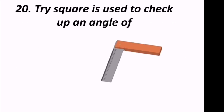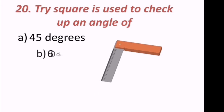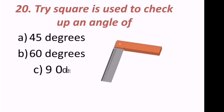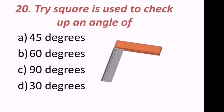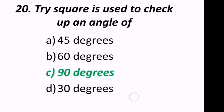Twentieth question: A tri-square is used to check an angle of how many degrees? The options are 45, 60, 90, or 30 degrees. The correct answer is 90 degrees — a tri-square is used to check the 90-degree angle.